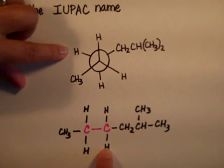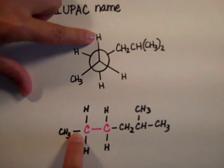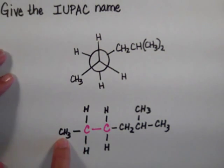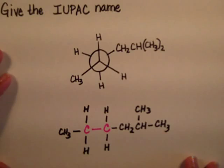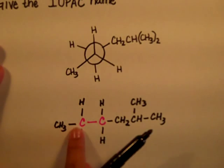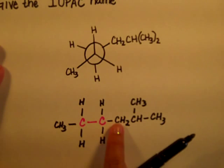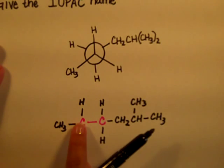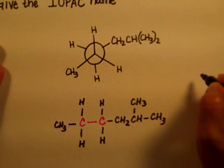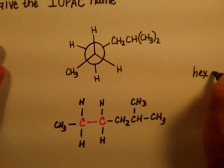The front carbon on the left has two hydrogens and a CH3. Always check your work before you give an answer. Now the longest chain on this compound is one, two, three, four, five, six carbons. So the parent name of this compound is hexane.